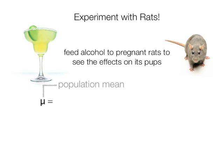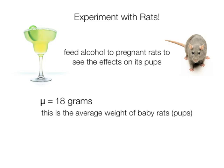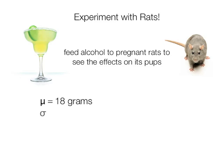Since psychologists have been working a long time with rats, we know that the average weight of a baby rat is 18 grams. This is pups whose mommies didn't drink. The standard deviation is 4 grams. That's the symbol for standard deviation and we also call it sigma.